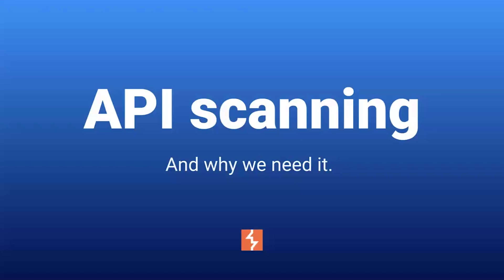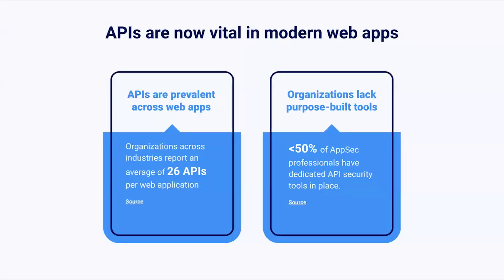So to begin with, why do we need purpose-built API scanning functionality? I'm sure this audience has their own thoughts on current challenges around APIs — and we'd love to hear those challenges. But generally speaking, as an industry trend, there is certainly a growing reliance on APIs and microservices in modern web apps, and probably a lot of legacy estates still out there as well. Data from EDS Global suggests that organizations across varying industries are reporting an average of 26 APIs per web application, and this number is really only growing over time. We certainly speak to customers with hundreds or even thousands of endpoints that they have to manage.